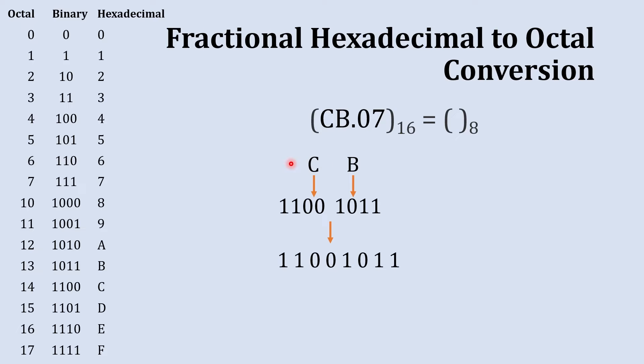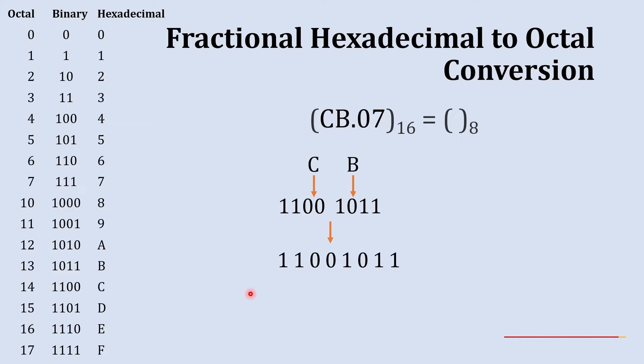The whole number part is now converted into binary. Now we'll convert this binary back into an octal number. When converting back into octal, we create sets of three binary digits to convert each into a single octal digit.